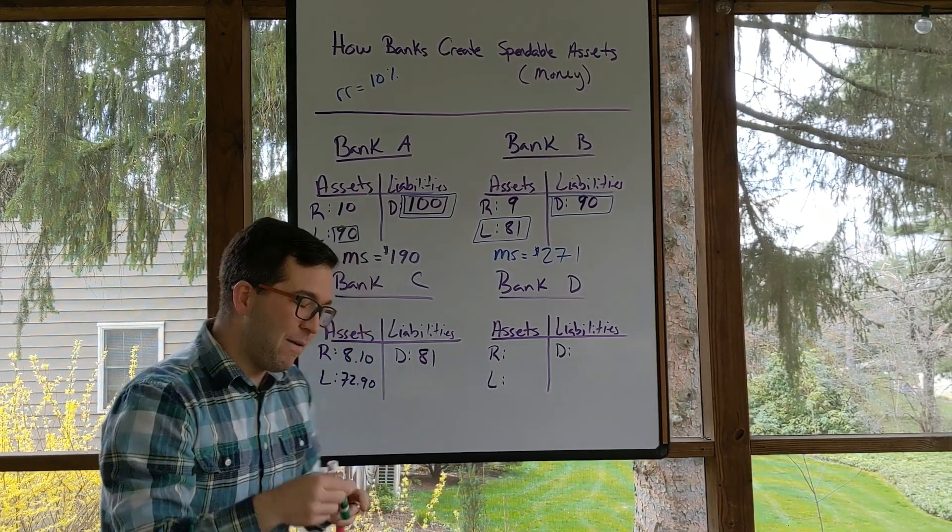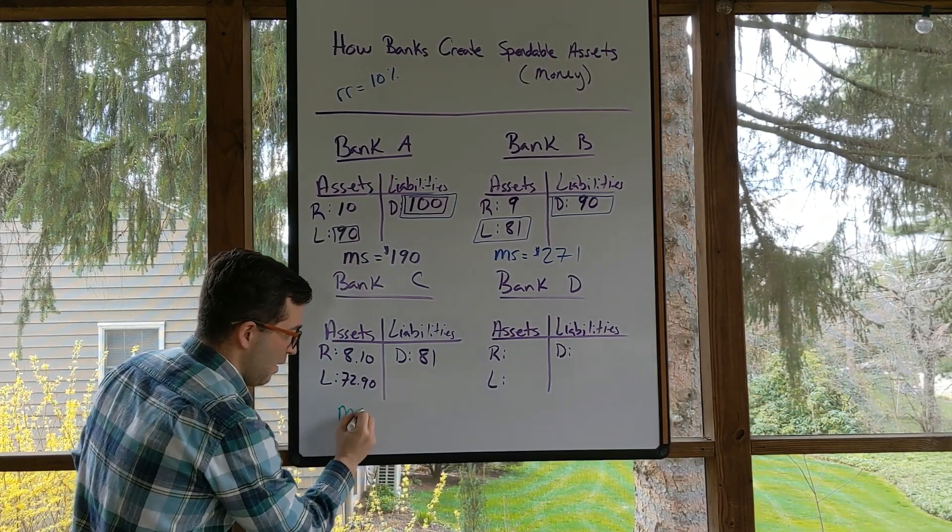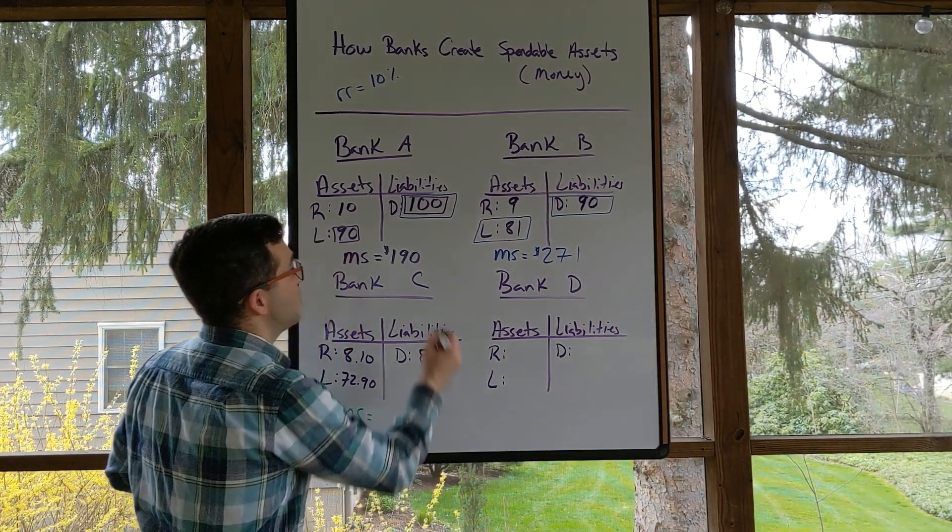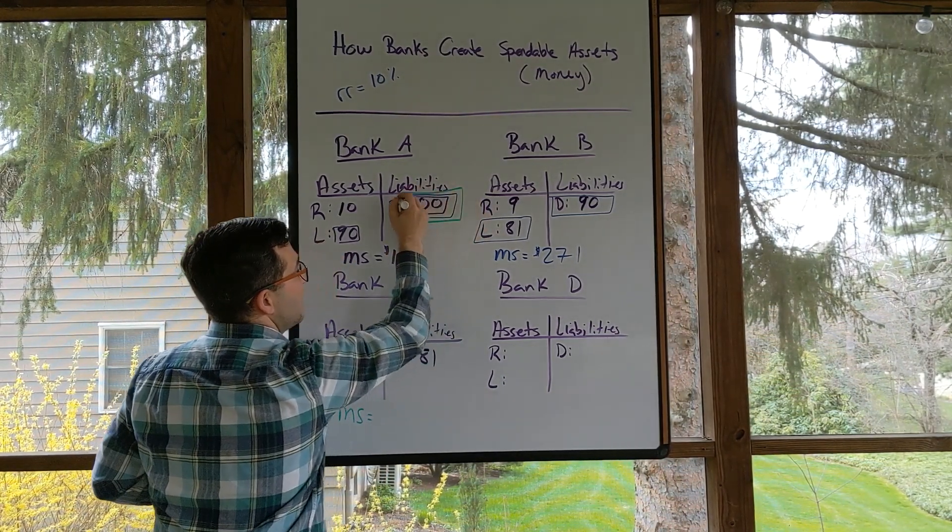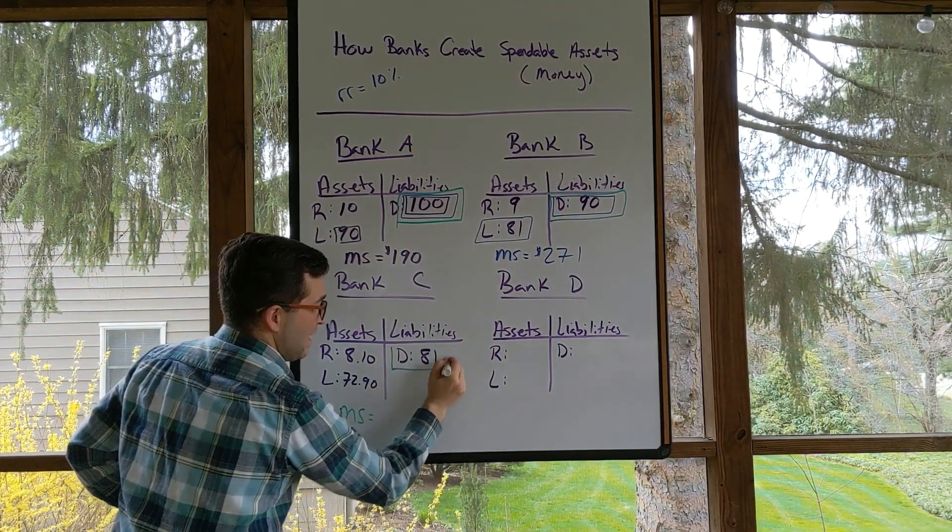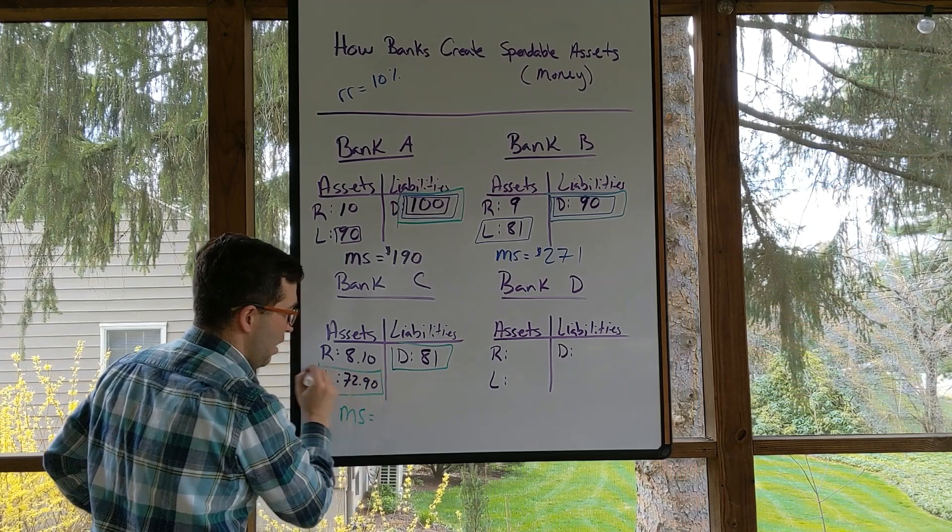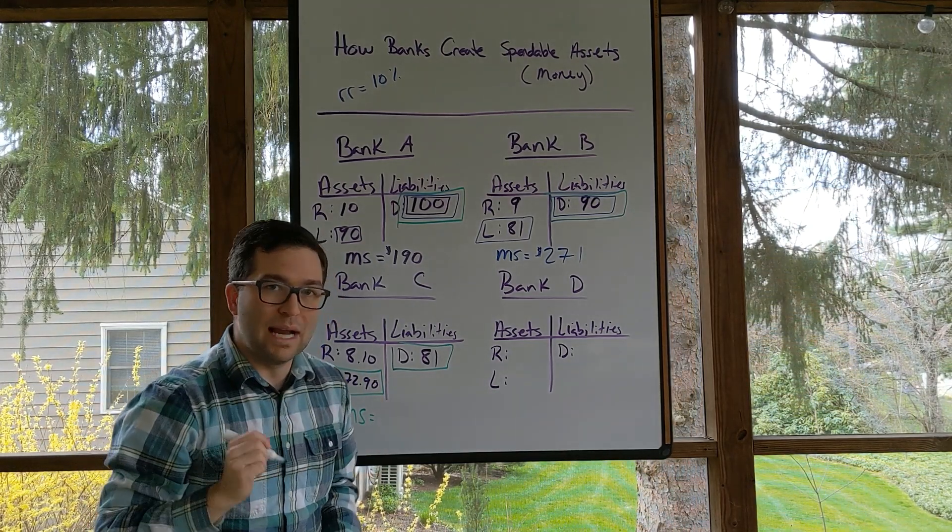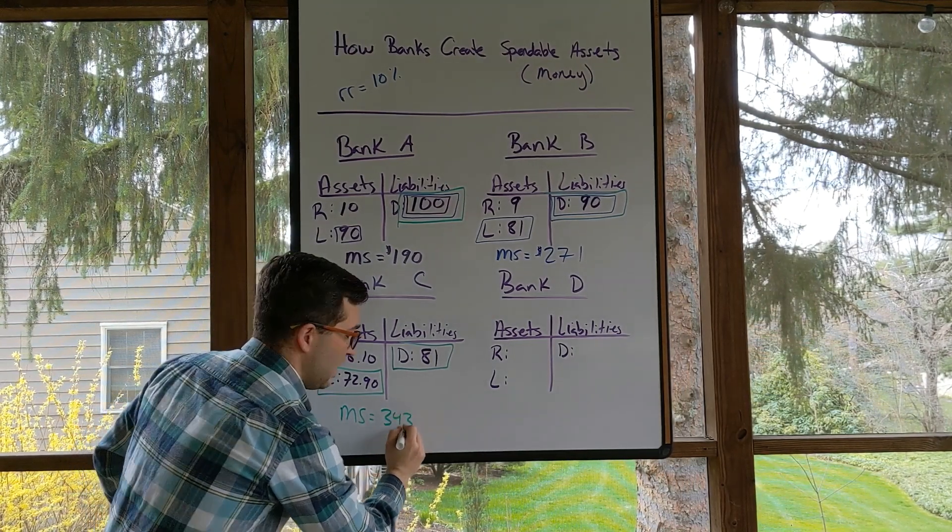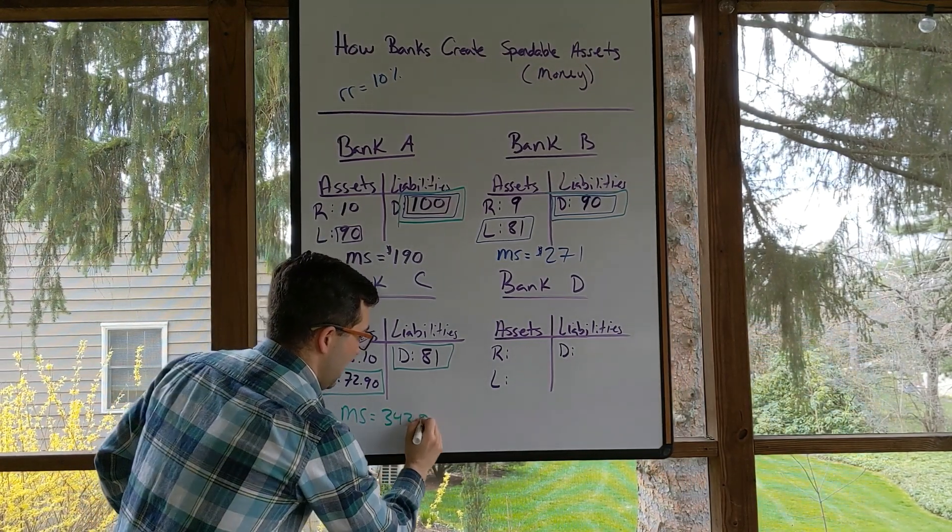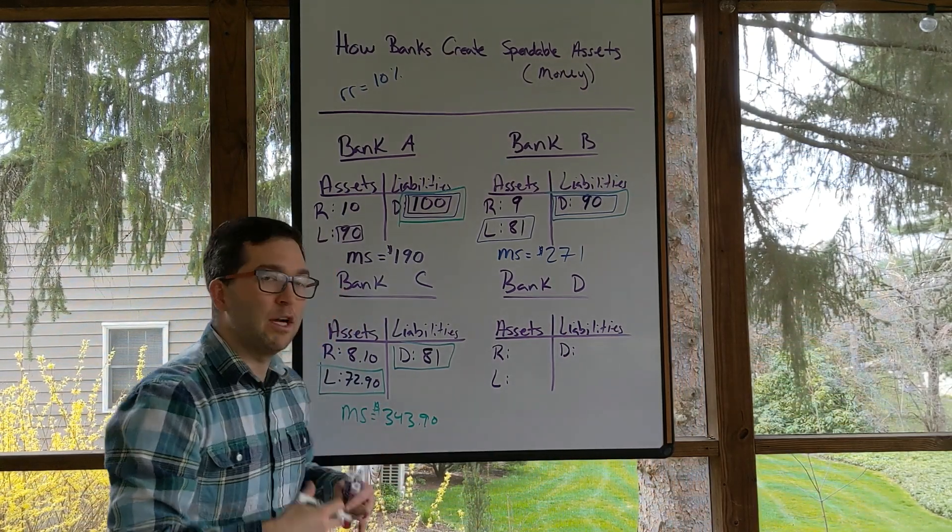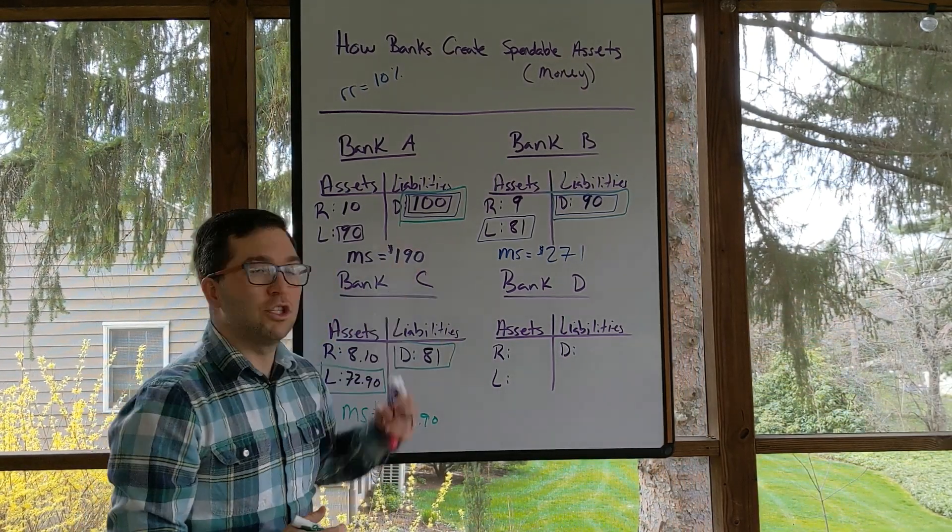Same process of thinking when we want to find the money supply then. Again, this money supply is going to be all the deposits that could be spent. So we have, again, this deposit, this deposit, this deposit, and the loans that are going out now. We add all three of those things up and we get $343.90. Again, we see the money supply growing because of this initial deposit.